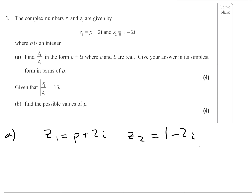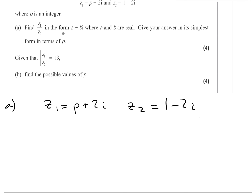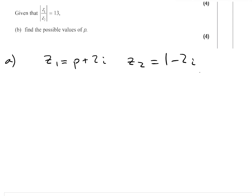The complex numbers Z1 and Z2 are given by Z1 equals P plus 2i, and Z2 equals 1 minus 2i. P is just some integer. The first part asks us to find Z1 over Z2 in the form A plus Bi, where A and B are real, in its simplest form in terms of P.